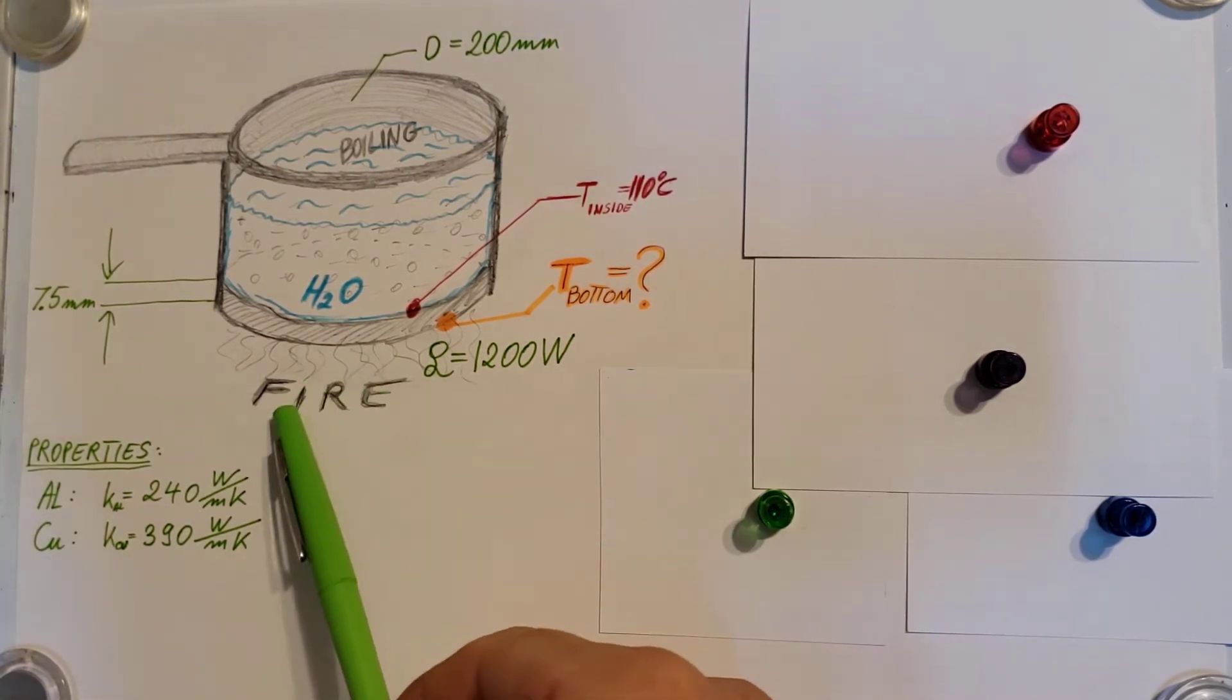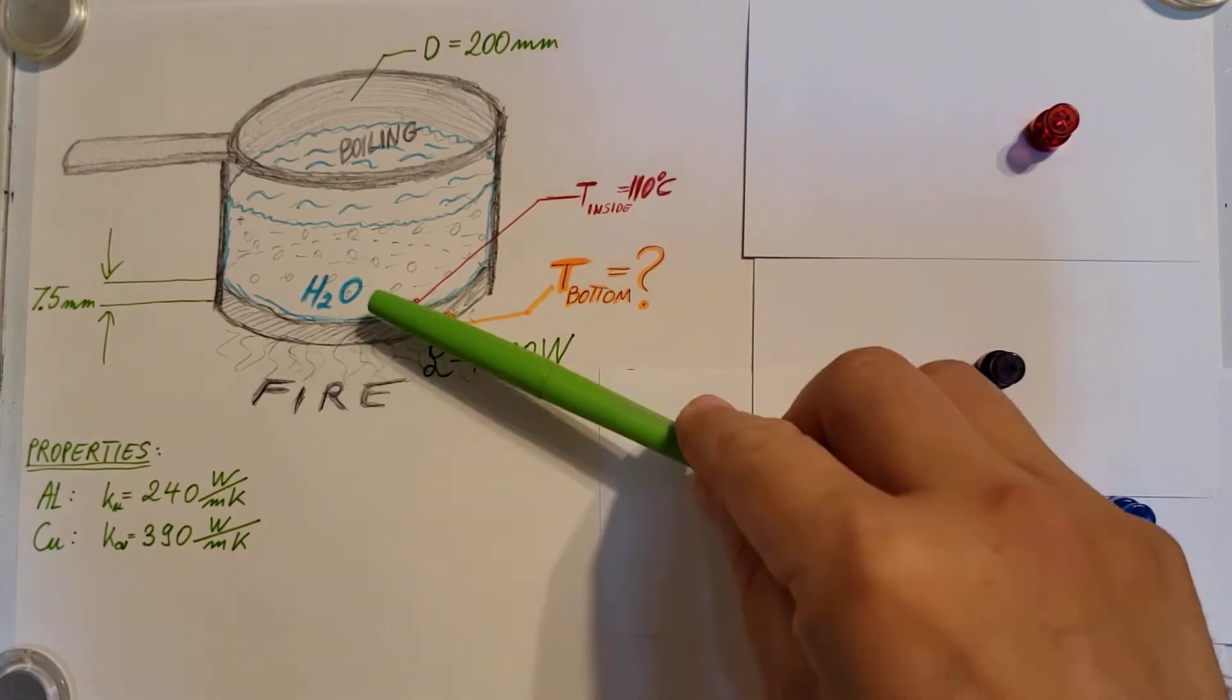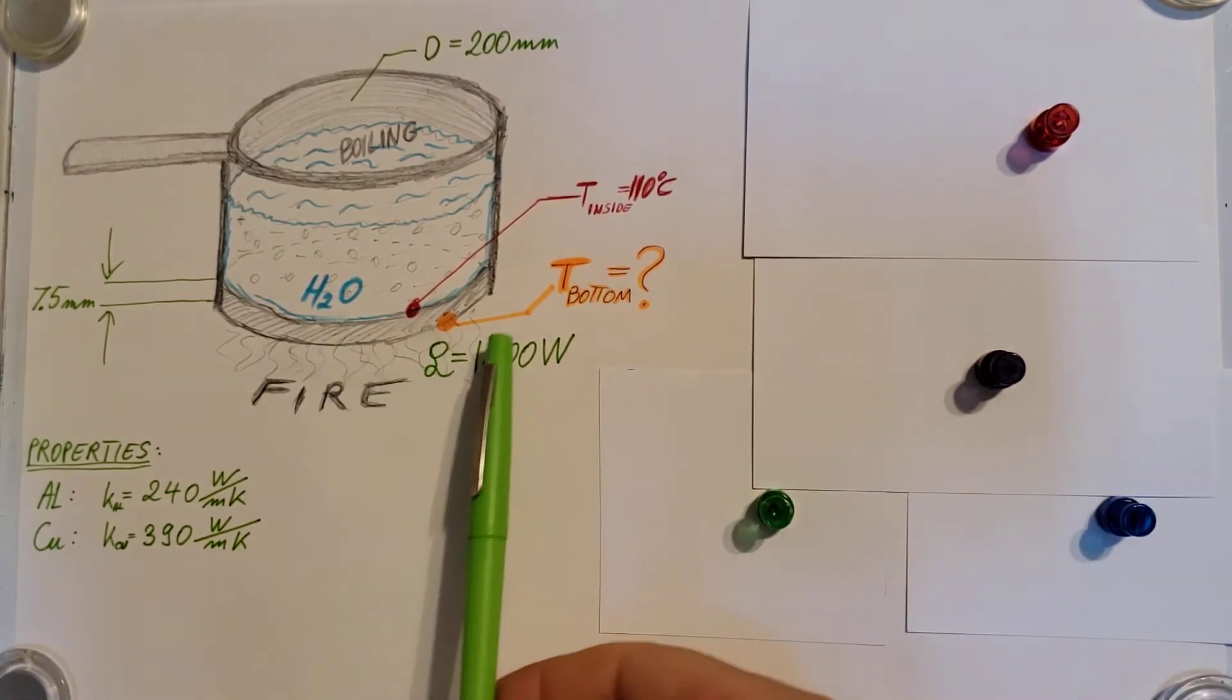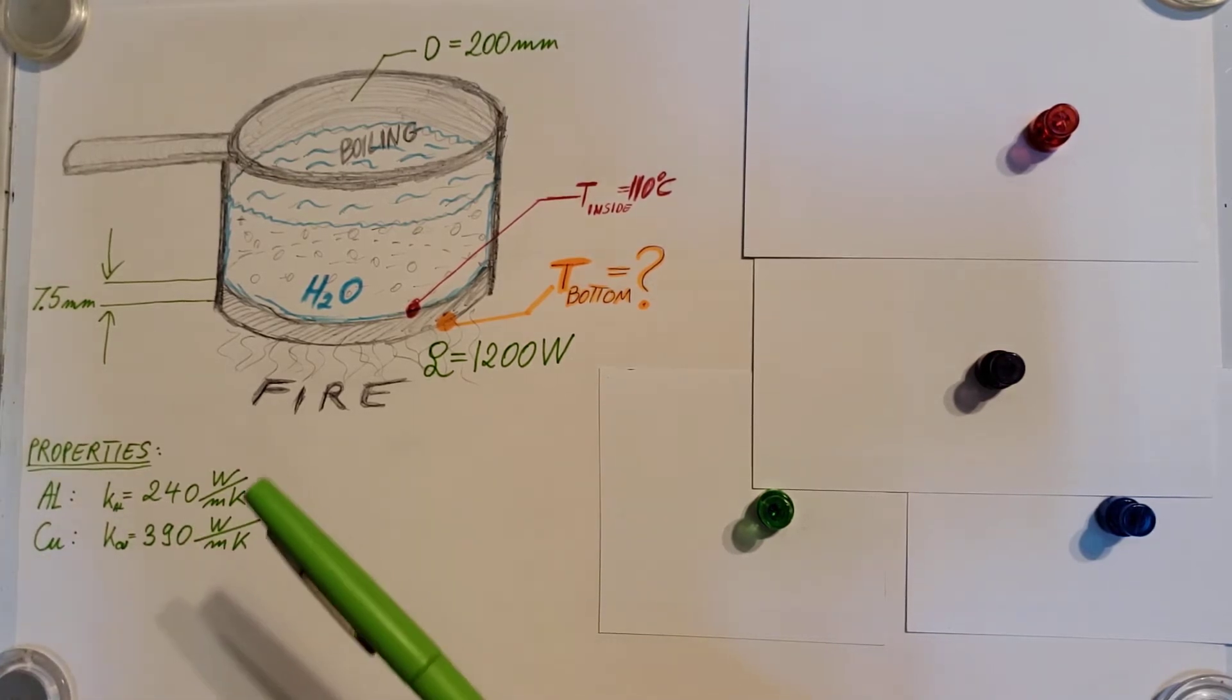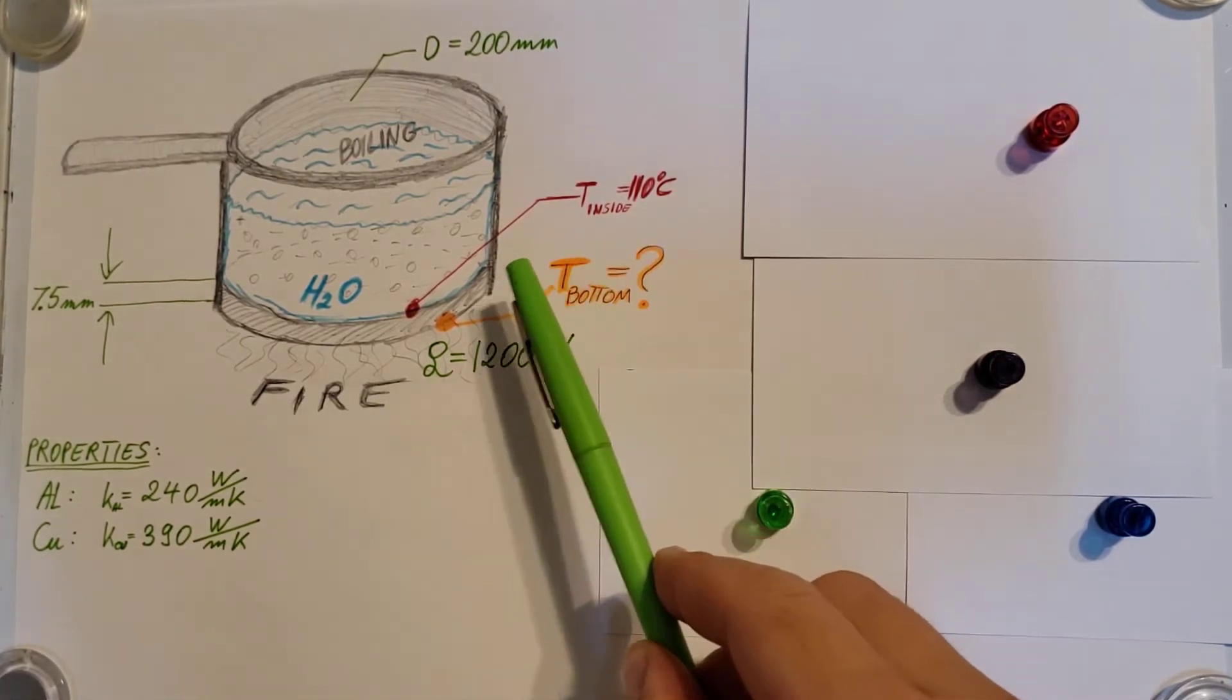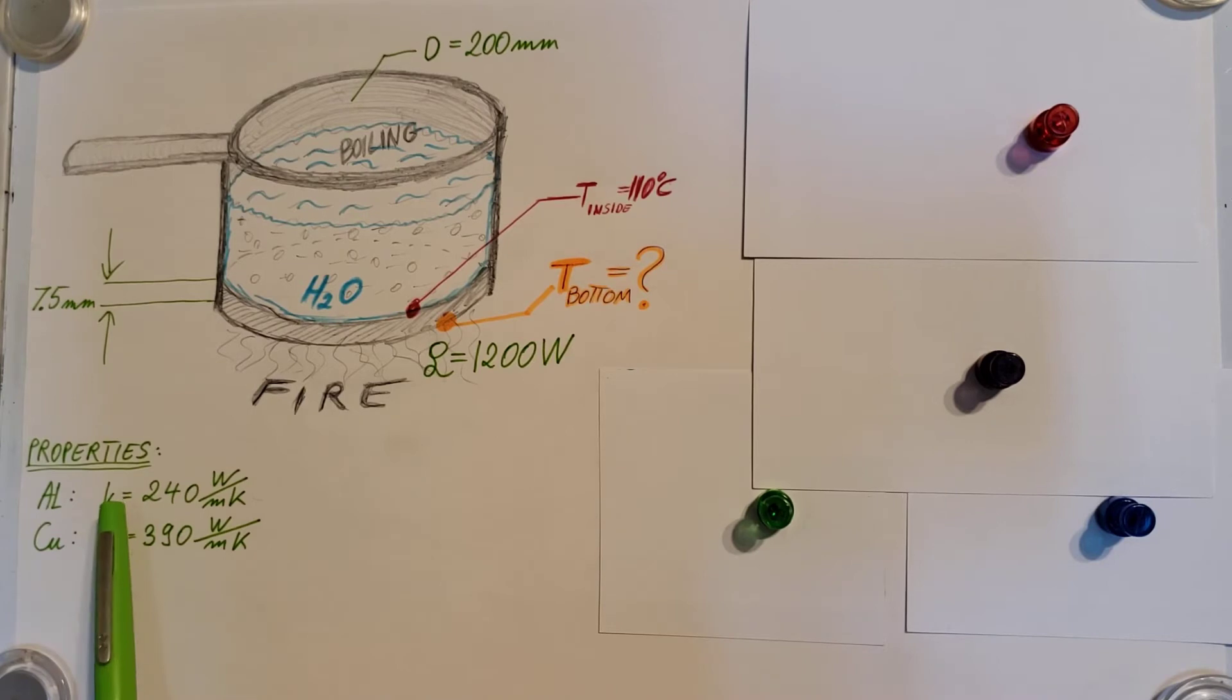We also know that the heat transferred from the stove to the pan is Q equals 1200 watts. They want us to find the bottom temperature for two different pots, one made of aluminum and one made of copper, and we have the thermal conductivity coefficient given for both of these.